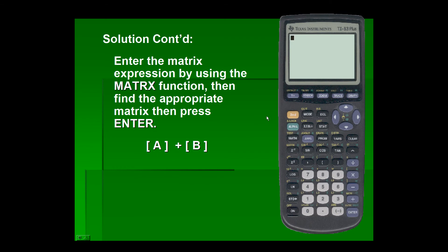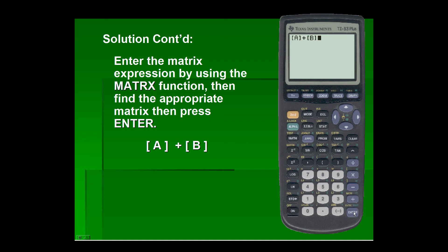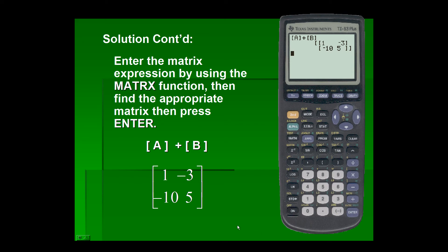Now that we're back at the home screen, we'll enter the matrix expression using the matrix function on our calculator — we'll simply add matrix A plus matrix B. I'll go back into the matrix menu, select matrix A plus, then go back into the matrix menu again and select matrix B for our resulting matrix.